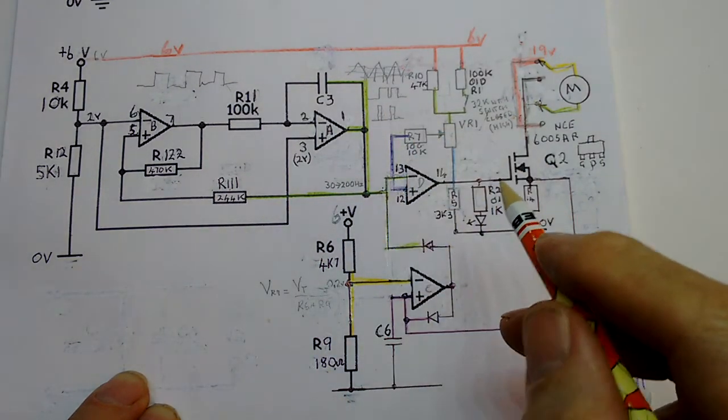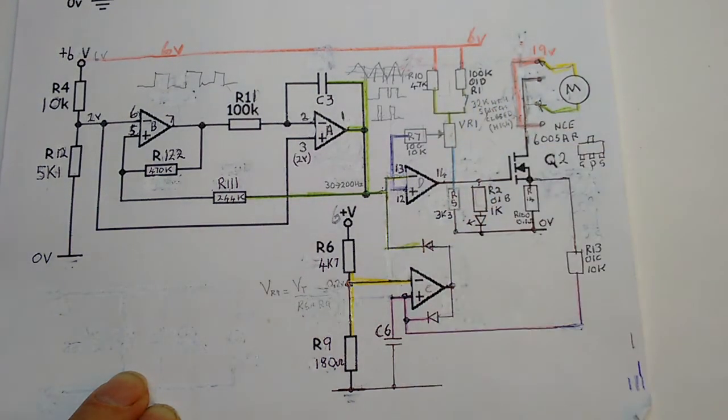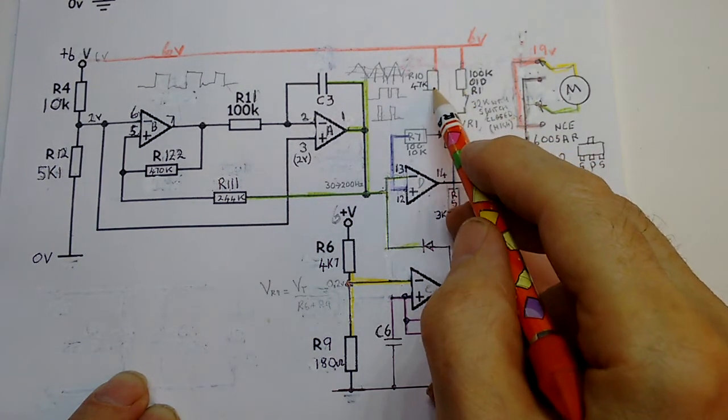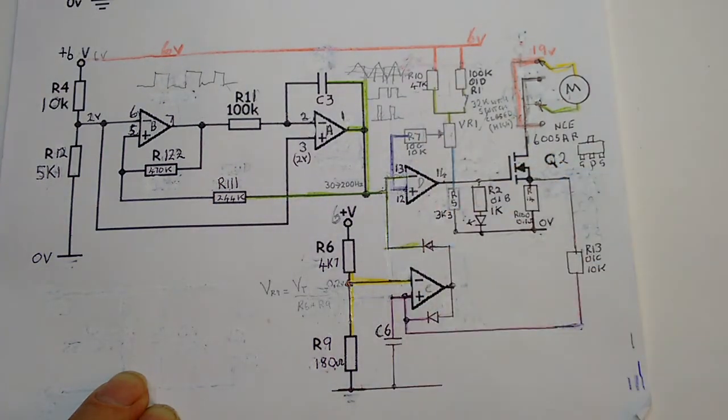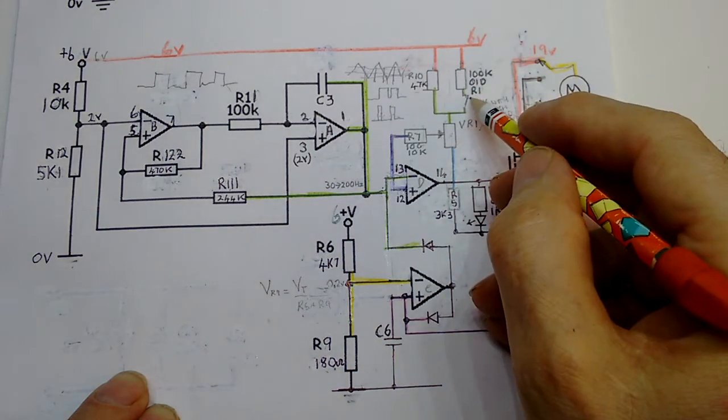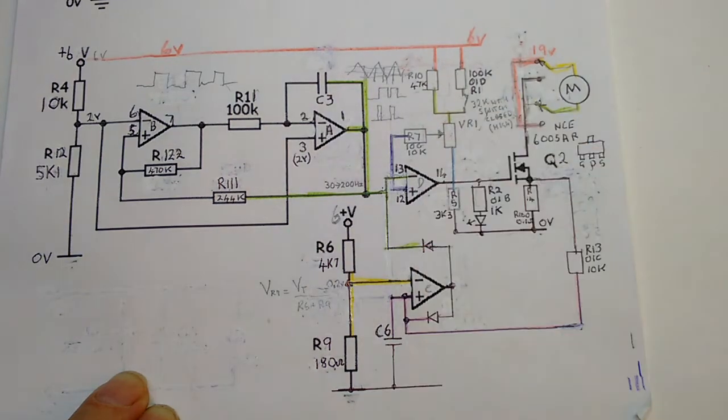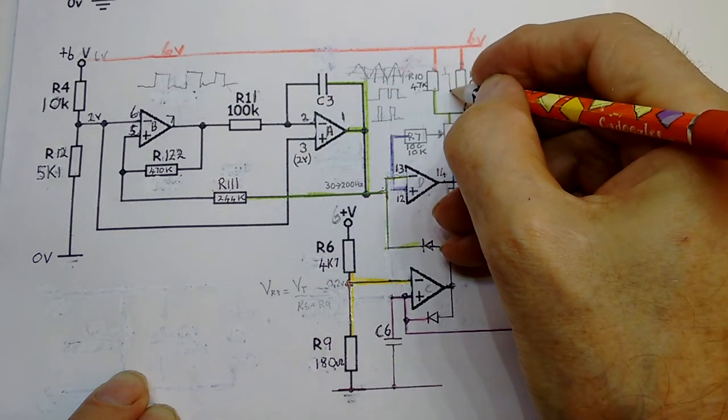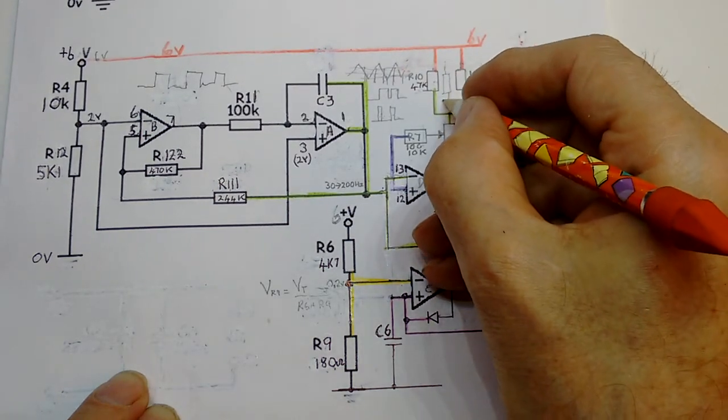Right, the other thing is the high-low switch. How does that work? Essentially what we've got is two resistors. They've always got R10 in the circuit, which is a 47k resistor. But if we switch the switch, we also include this 100k in parallel with the 47 kilohm resistor, and that then gives us a single resistor which replaces those two of about 33k.